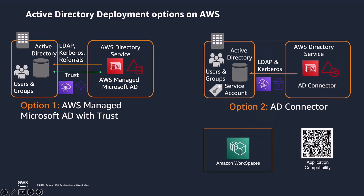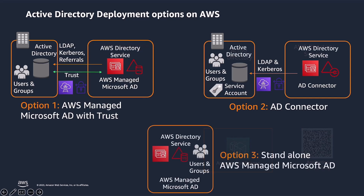Or customers can use Active Directory Connector for services like Amazon Workspaces. AD Connector is a directory gateway with which you can redirect directory requests to your on-premises Microsoft AD without caching any information in the cloud. For a complete list of applications compatible with AD Connector, please scan the QR code displayed on your screen. Finally, customers can also choose to run a standalone Active Directory with AWS-managed Microsoft AD.